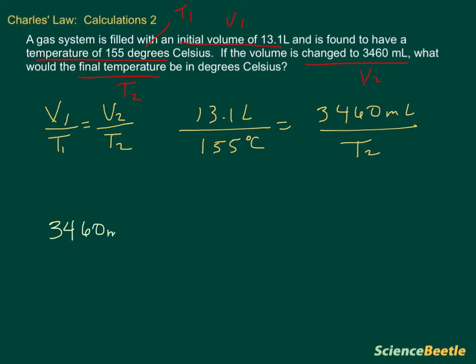To show you the actual conversion, we're going to take 3460 milliliters and convert this to liters. We do that by dividing by 1,000, because there is 1,000 milliliters in one liter. The milliliters cancel, leaving us the units of liters. When we do this, we'll get 3.460 liters.